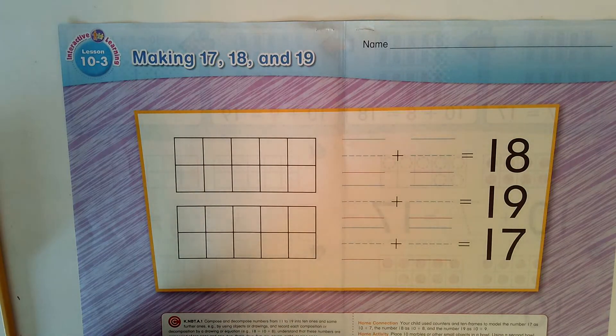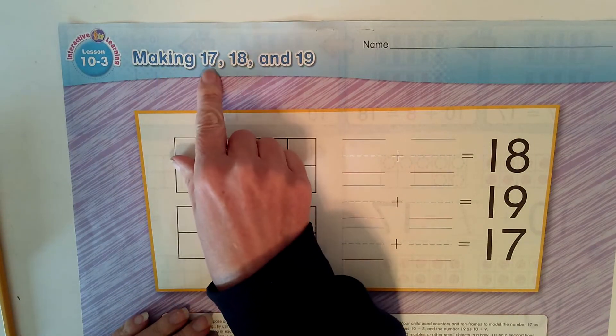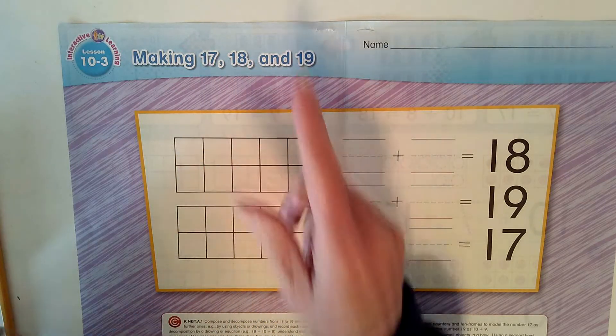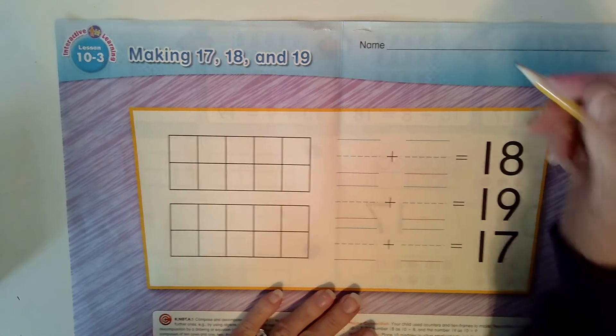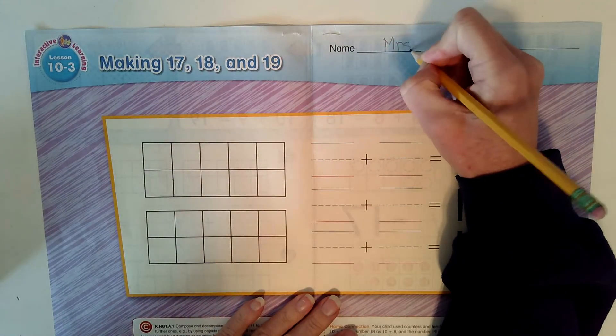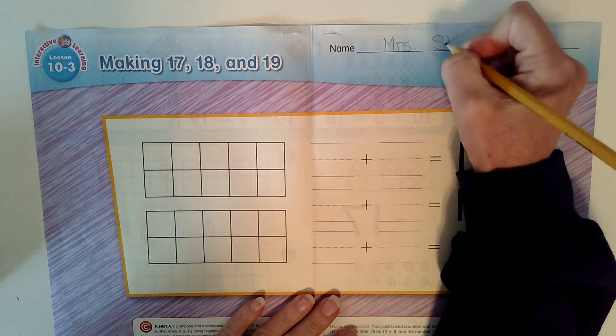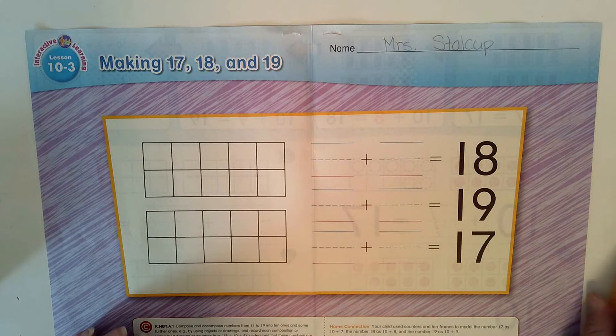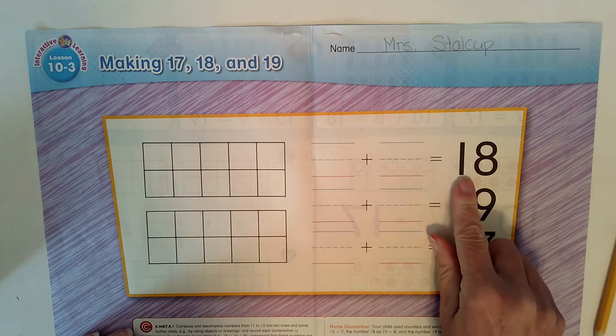In this lesson, we are going to learn how to make 17, 18, and 19. So let's begin by putting our name on the top of our paper. I will write Mrs. Stalkup. You will write your name. Okay, so the first number we're going to make is 18.